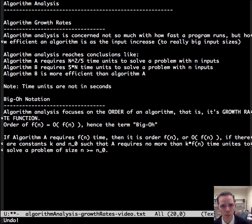So formally, if we have an algorithm that requires a function of time, then that order for that function is big O of that function. If we can come up with two constants, a K and an N0, such that for the algorithm, it requires no more time than the constant times of that function.